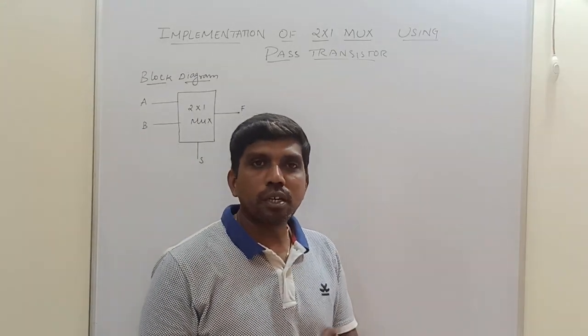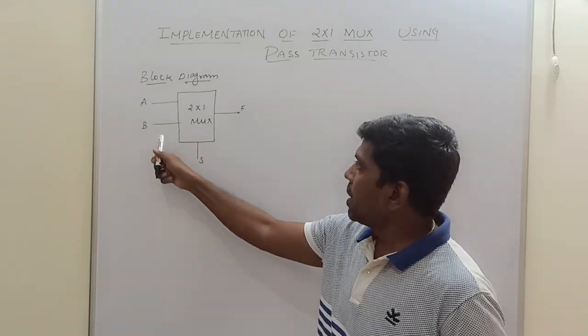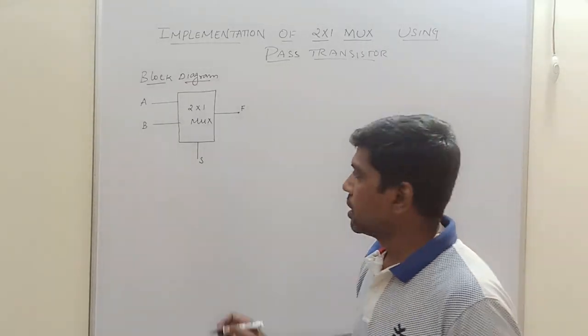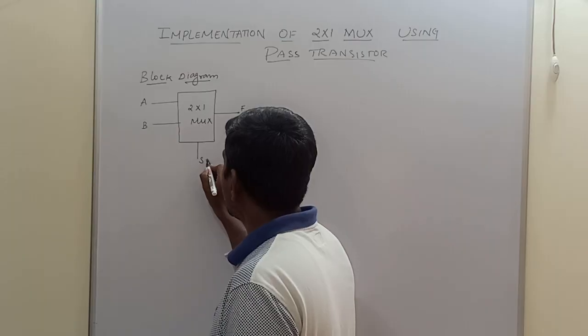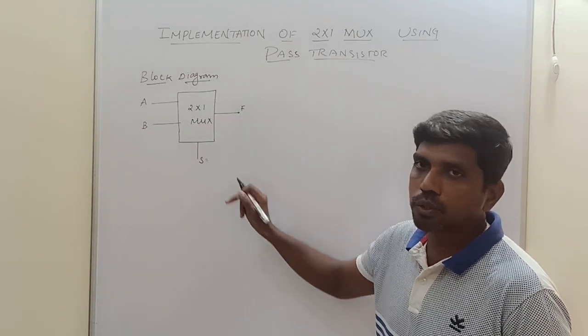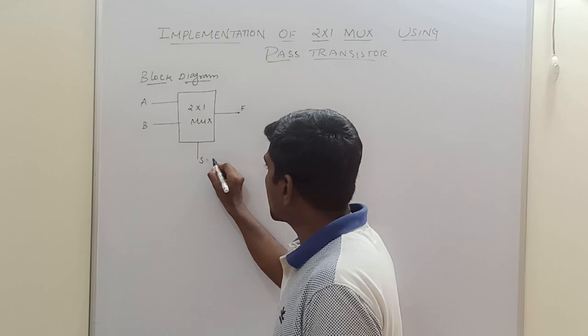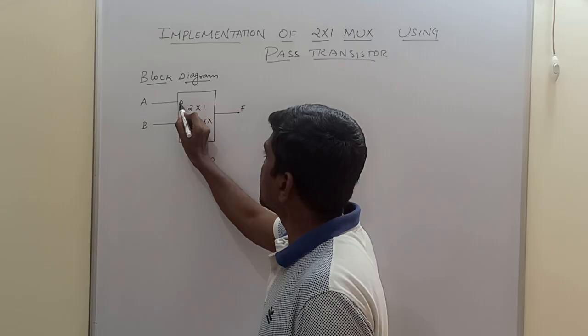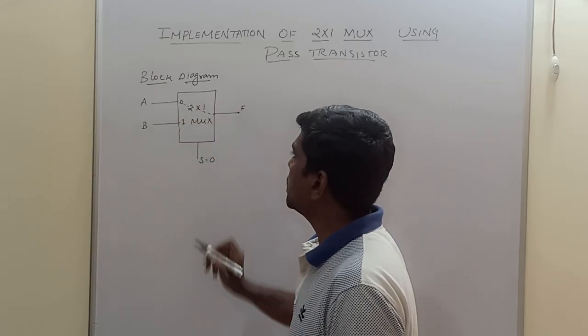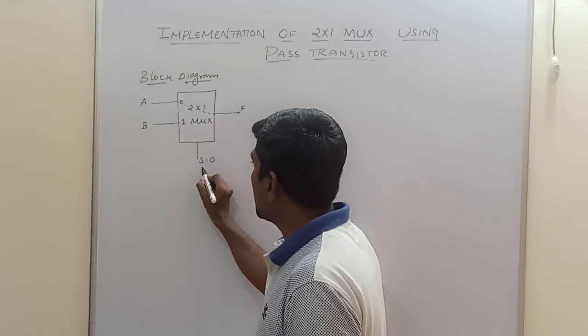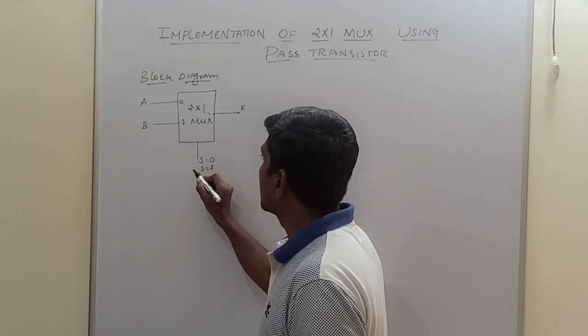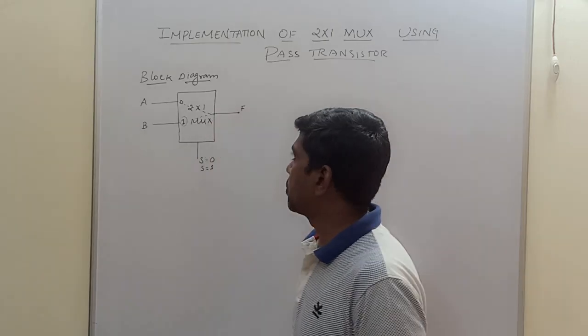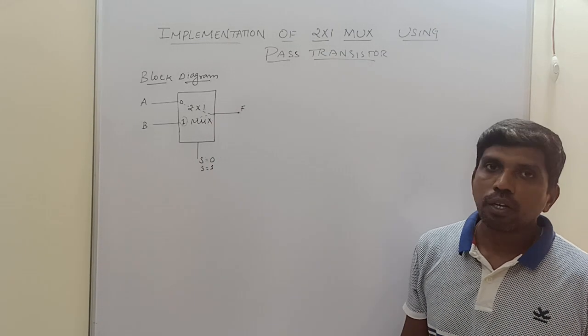So what is MUX? A MUX has many inputs but generates only one output based on the selection line. Here selection line is S. We have two possibilities of values applied to the selection line. When S equals 0, the 0th terminal input is connected with the output F. When S equals 1, the first terminal value B is connected to output F. So this is the basic operation of a multiplexer.